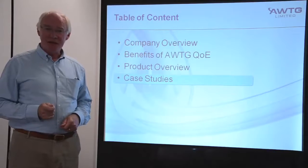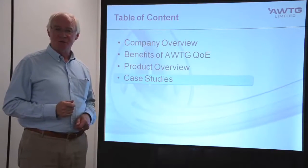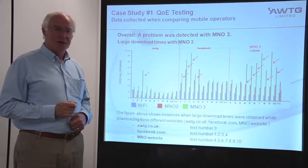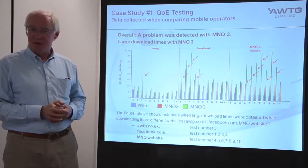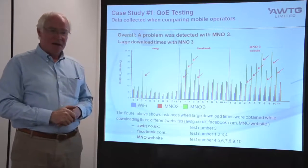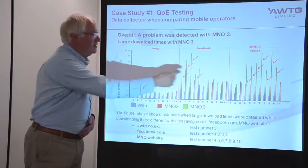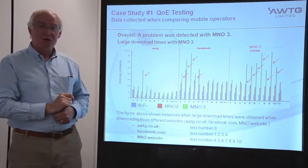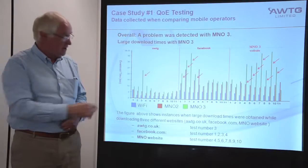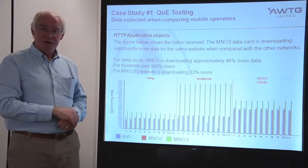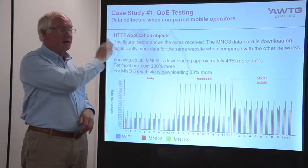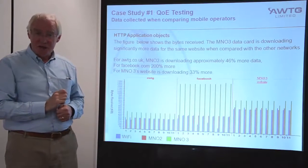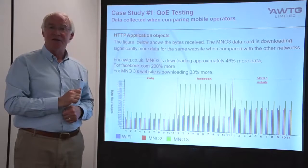Let me introduce some case studies which show the Quality of Experience tool in operation. In our first test we looked at the performance of three networks — a Wi-Fi network and two mobile network operators — examining download time as each network visited one of three websites. What soon became apparent was that for mobile network operator 3 the download times were significantly larger than for the other networks. By drilling down deeper into our analysis tool and looking at the HTTP application objects, we soon began to realize that for mobile network operator 3 significantly more data was being downloaded for the same website.